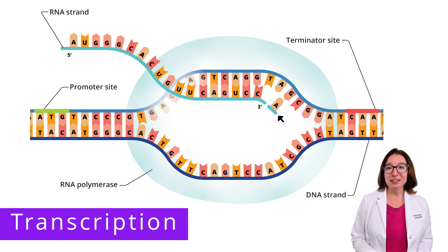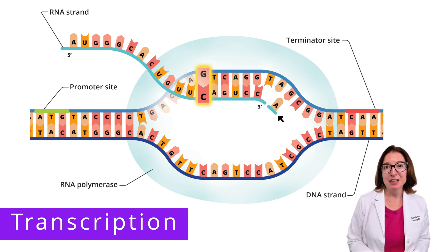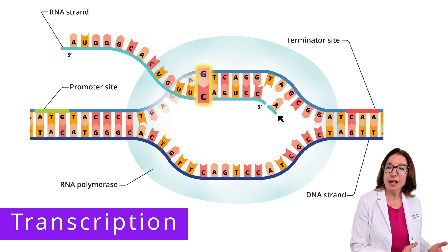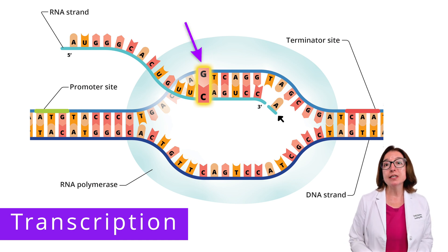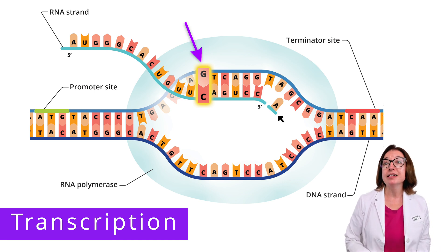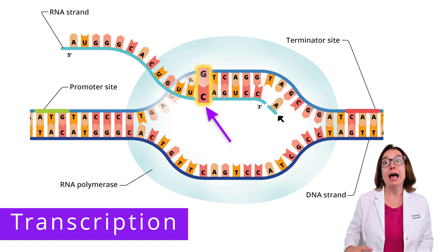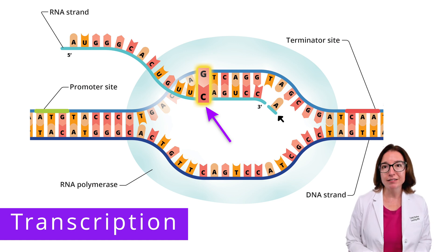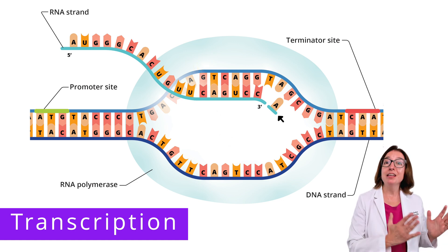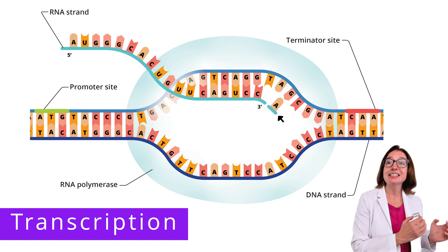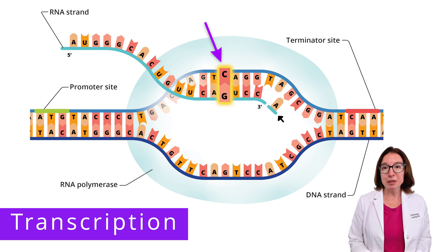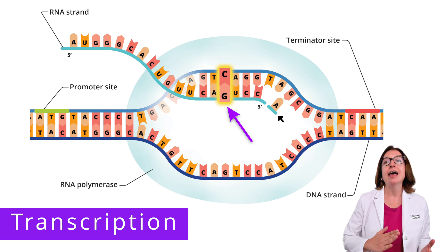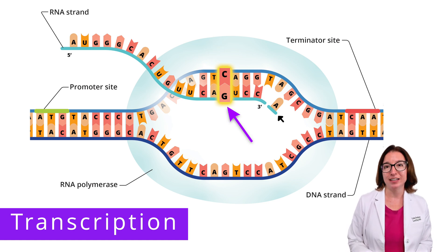As a reminder, guanine and cytosine are complementary base pairs. So if the DNA nucleotide contains guanine, then RNA polymerase will synthesize a nucleotide that contains cytosine and will add that on to the mRNA strand. And conversely, if the DNA nucleotide contains cytosine, then RNA polymerase will synthesize a nucleotide that contains guanine and add that on to the mRNA strand.